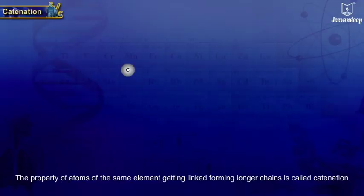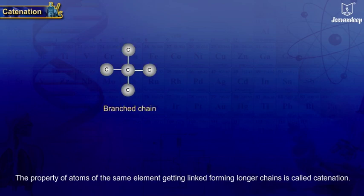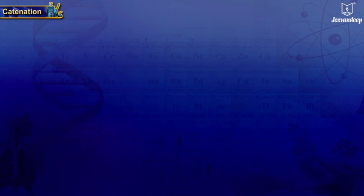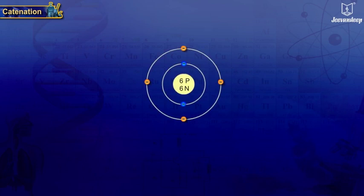Catenation: the property of atoms of the same element getting linked, forming longer chains, is called catenation. The atomic number of carbon atom is six.